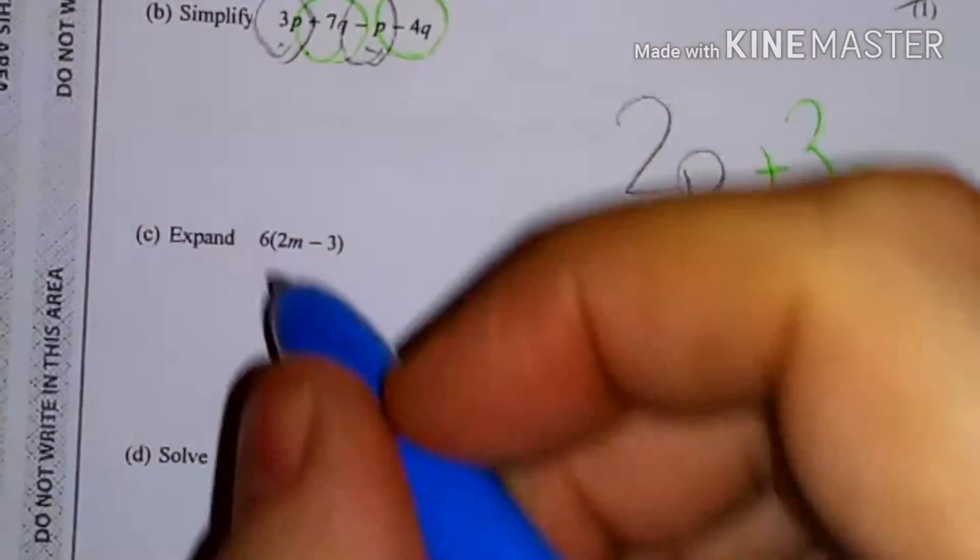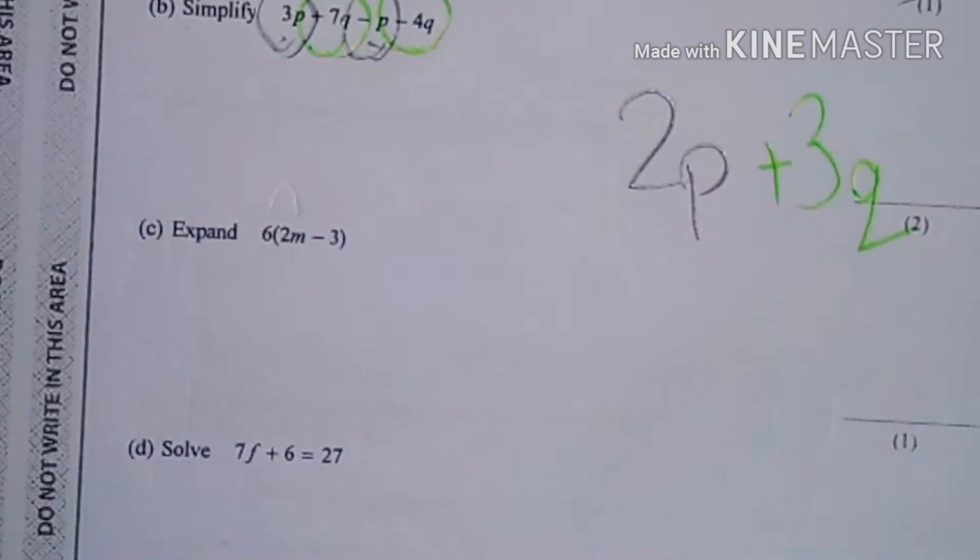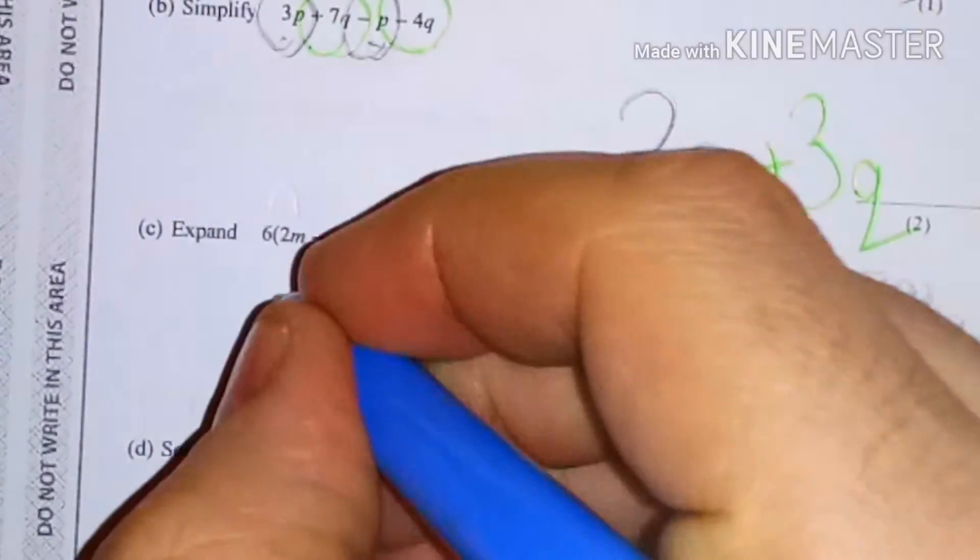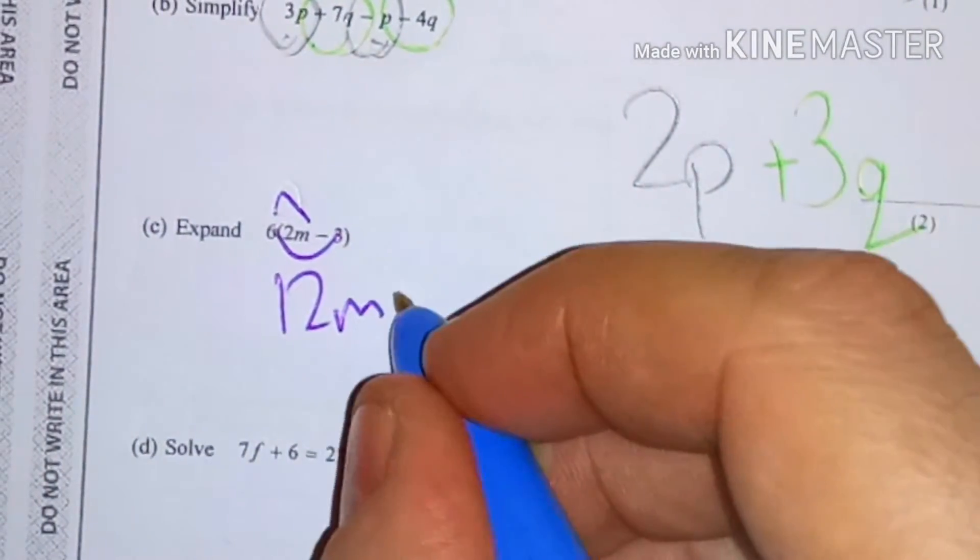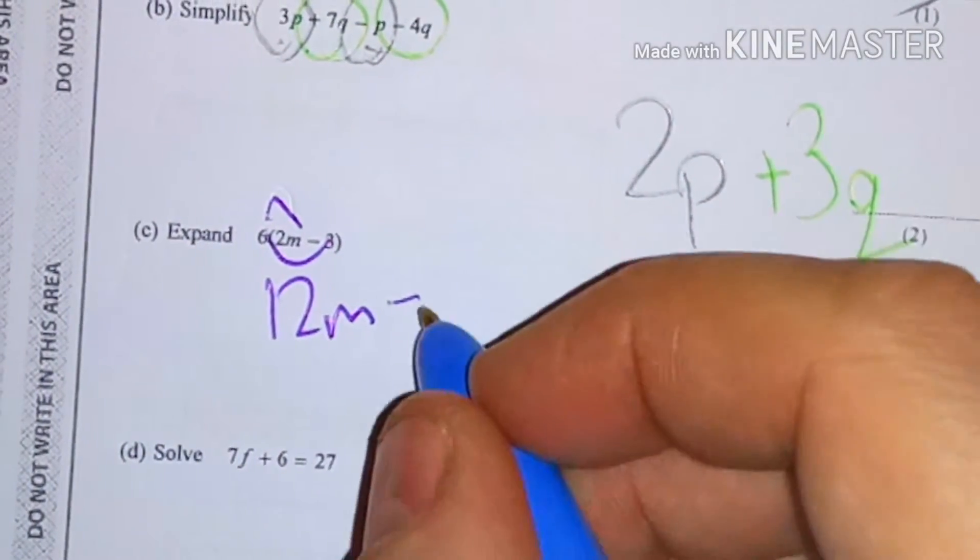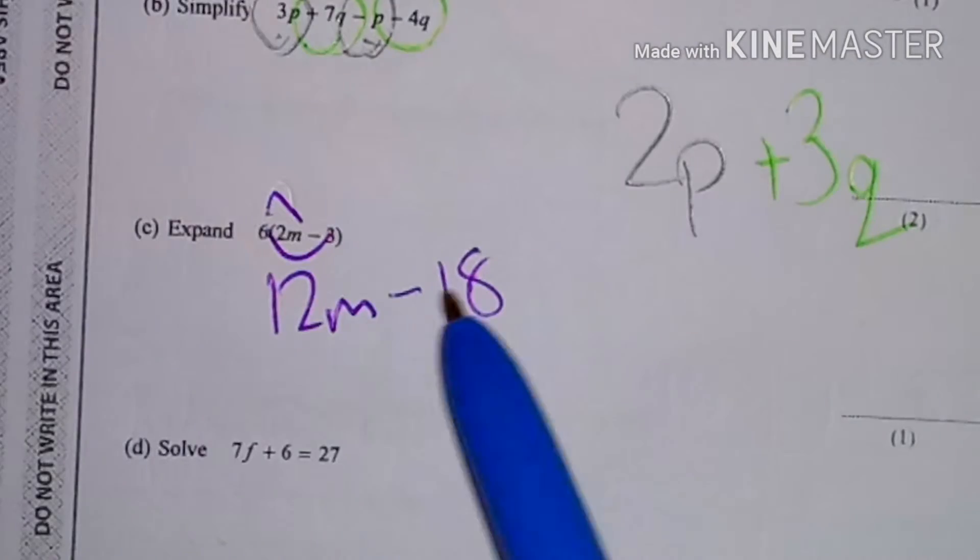And the next bit is expand. So 6 times 2 is 12, so it's going to be 12m. 6 times minus 3, so I'm going to put the minus first. 6 times 3 is 18, so it's 12m minus 18.